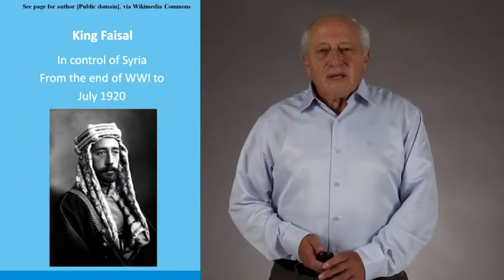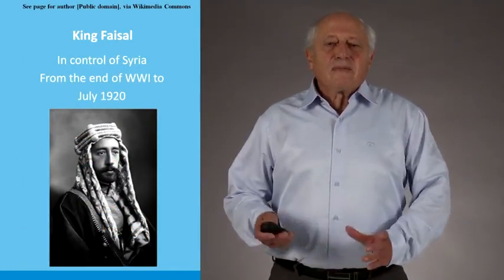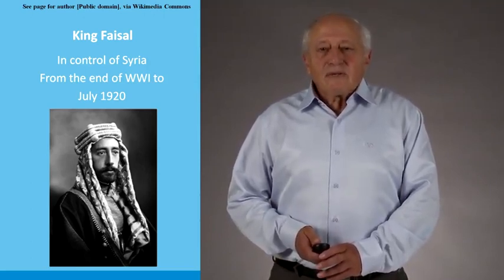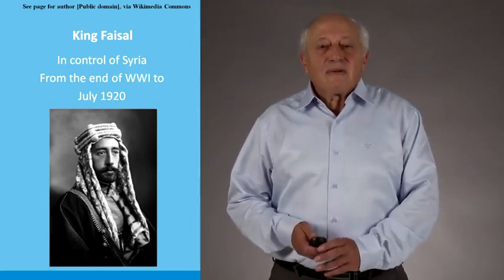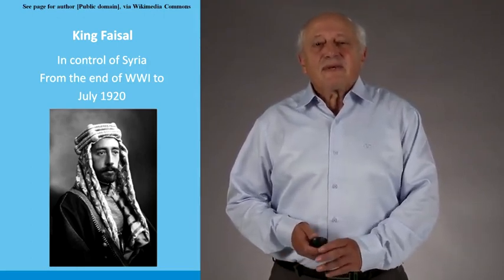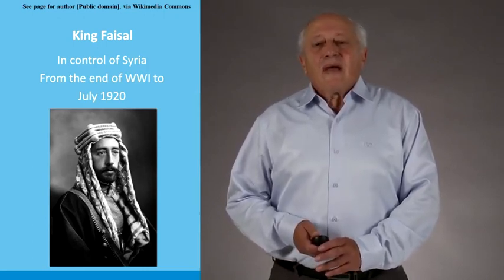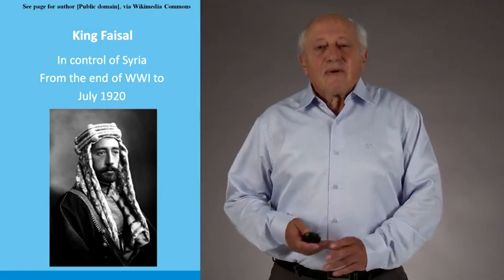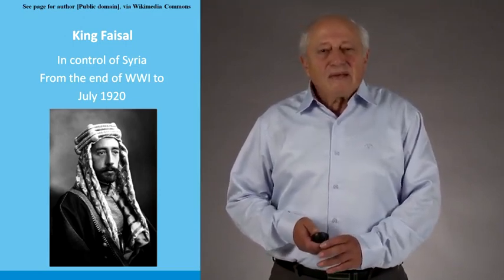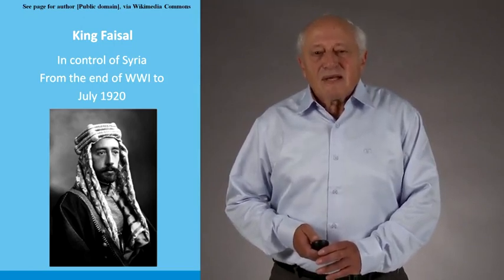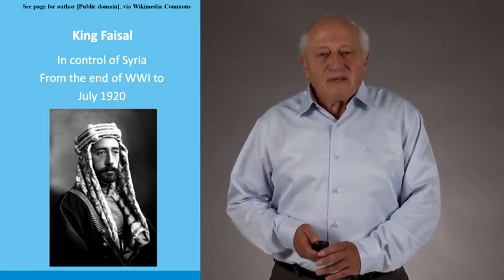Faisal, the son of Hussein Ibn Ali, who had led the Arab rebellion against the Ottomans, was at the end of the war in control of an Arab state, the capital of which was Damascus in Syria, which was taken with the assistance of the Arab rebels of the Arab revolt at the end of the war. And Faisal remained in this Syrian Arab state under his control until 1920, when he was finally evicted by the French with actual British agreement.